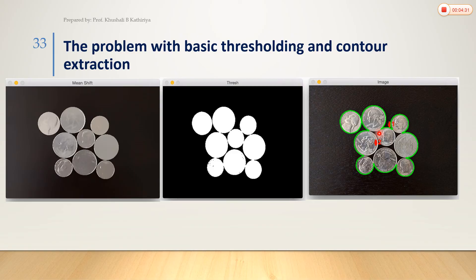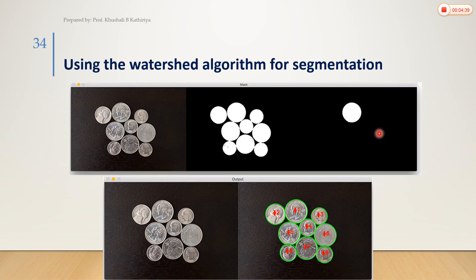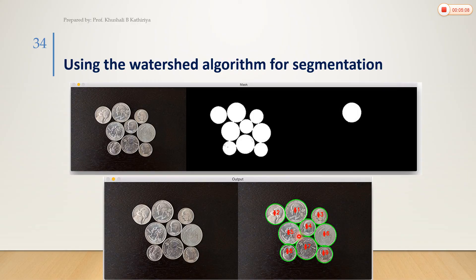In the watershed algorithm, we start with the original image, apply thresholding to make a binary image, then add a marker image, and apply the watershed algorithm to produce a final image with boundaries. This allows us to extract each individual segment from the overlapping objects.